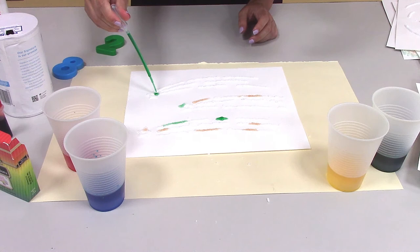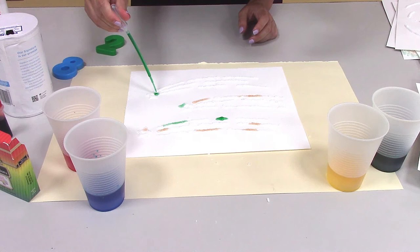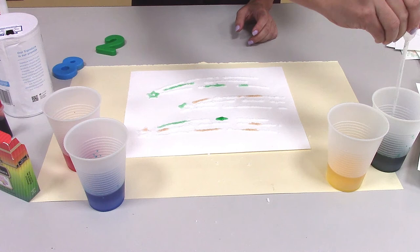And so this is how you watercolor paint. You just take the different colors that you want, dropping it in different spots. You're going to do that until you've created a beautiful image.